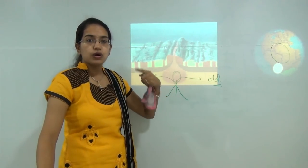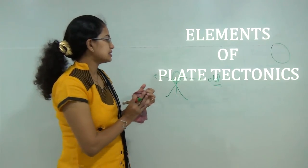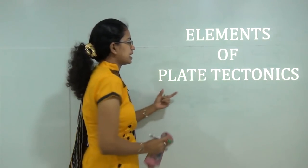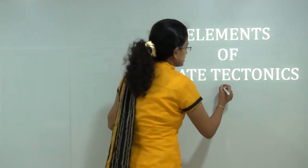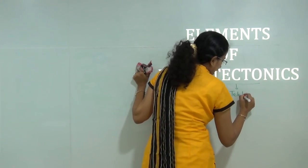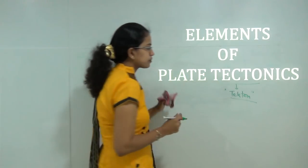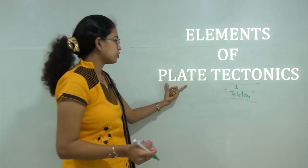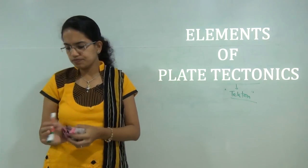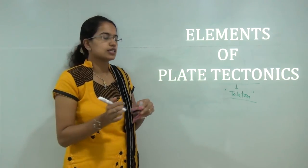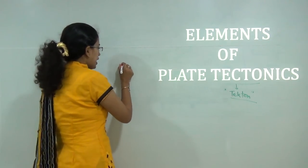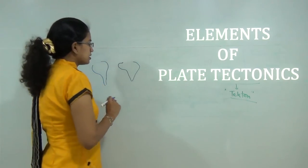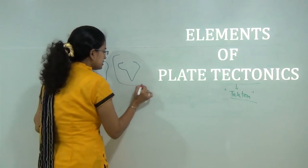Before we move on to how the process of plate tectonics works, let's understand the basic elements. As the name suggests, it is made up of two words: plate and tectonics. Tectonic is derived from the word 'tecton' which means builder or architect. Plates are the different slabs on the earth's surface that Wilson classified — for example, an African plate, an American plate, and so on.